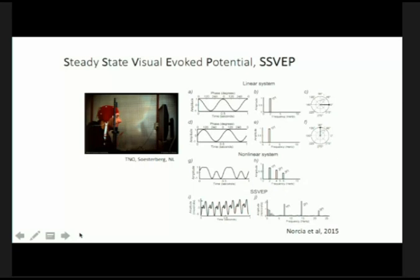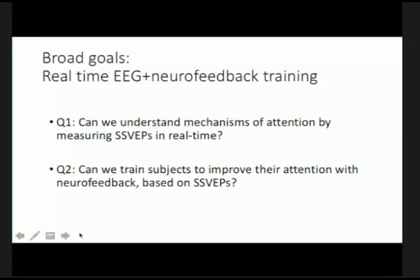You can play tricks with this: you can flicker whatever the subject is seeing on the screen at a particular frequency, and your brain will respond at the same frequency and harmonics in the EEG. So if you flicker something at 10 Hz, your brain responds at 10 Hz, 20 Hz, 30 Hz. If you flicker faster than the flicker fusion rate — beyond 60 or 80 Hz — the brain can't resolve individual flashes. These flickering-driven measurements are called steady-state visually evoked potentials, or SSVEPs.